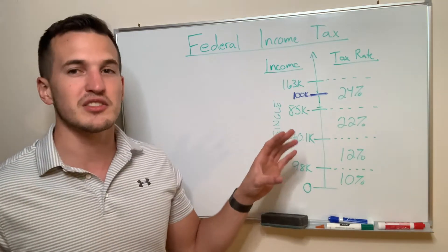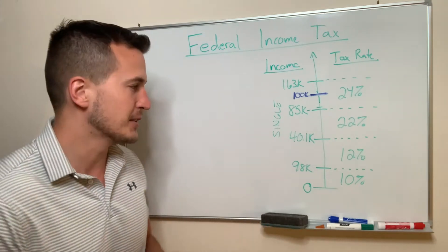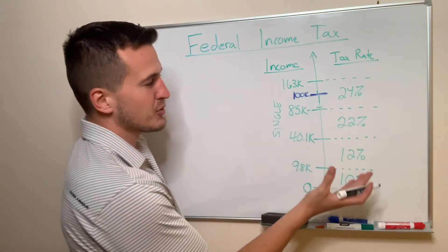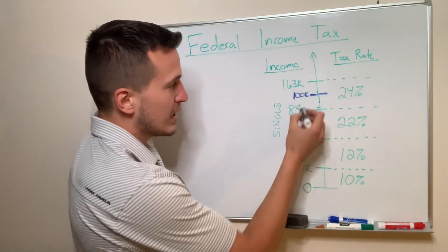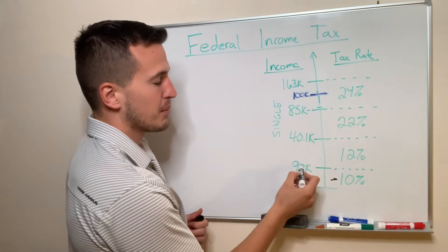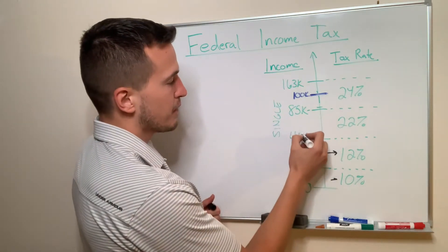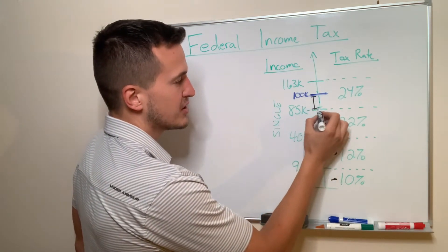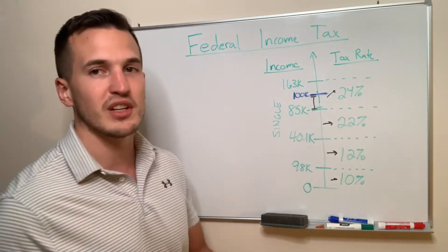We're going to use an example for someone who's single and making $100,000. How is their federal tax calculated? The whole system is graduated — meaning you pay different tax rates as you move up the income ladder. Of this $100,000 salary, the first $9,875 is taxed at 10%. From $9,875 up to $40,000, that chunk is taxed at 12%. From $40,000 to $85,000, that's taxed at 22%. And the money between $85,000 and $100,000 — around $15,000 — is taxed at the 24% bracket.